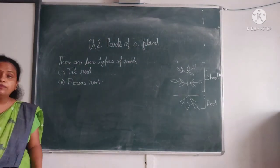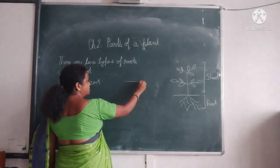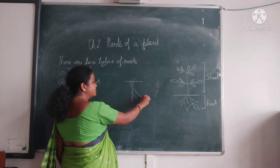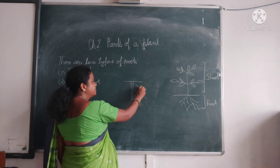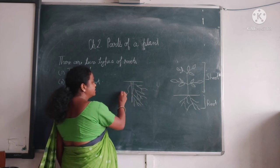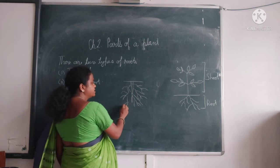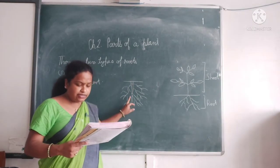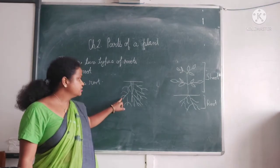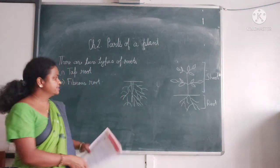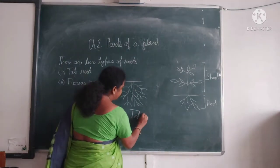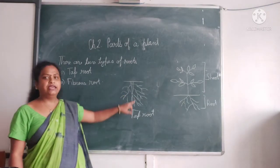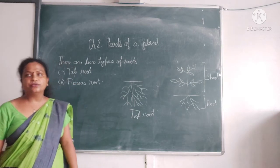What is a taproot? The taproot has one main root, and it has many smaller separate branches coming from it. One is the main root and the others are its branches — that is why it is called a taproot.